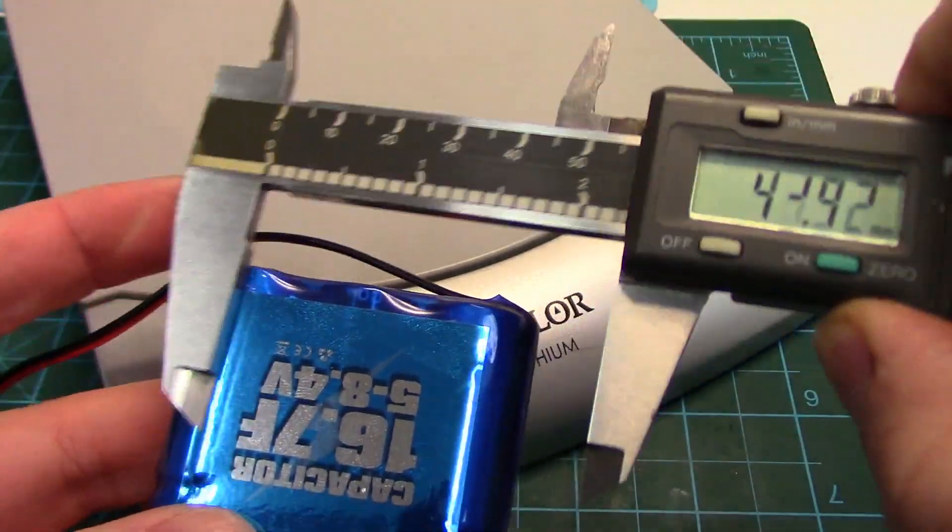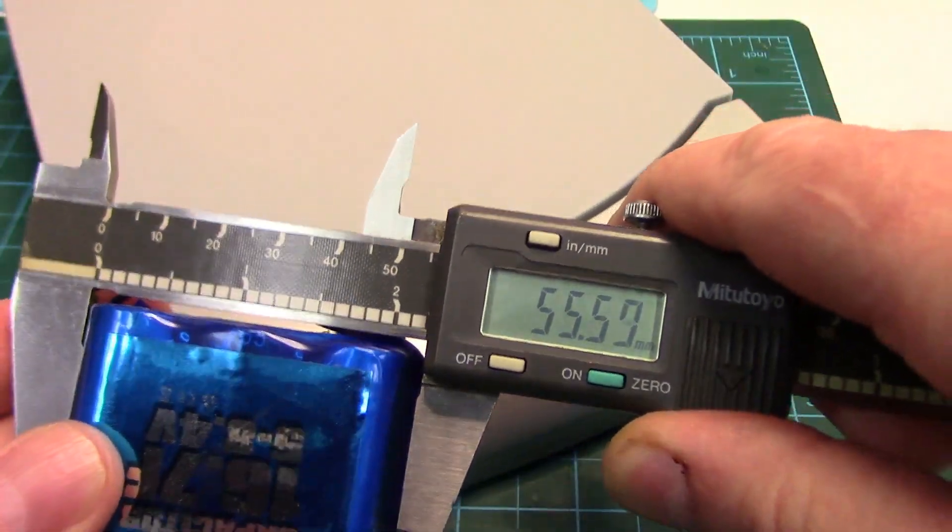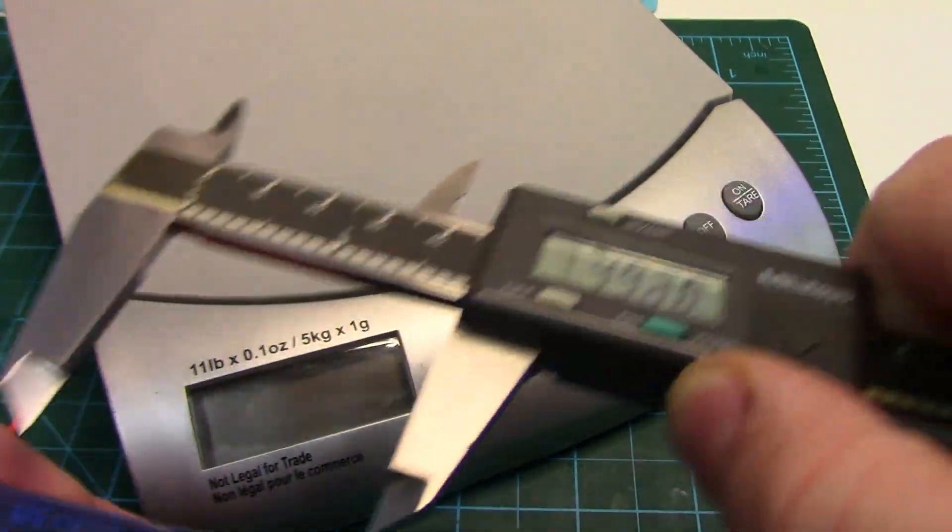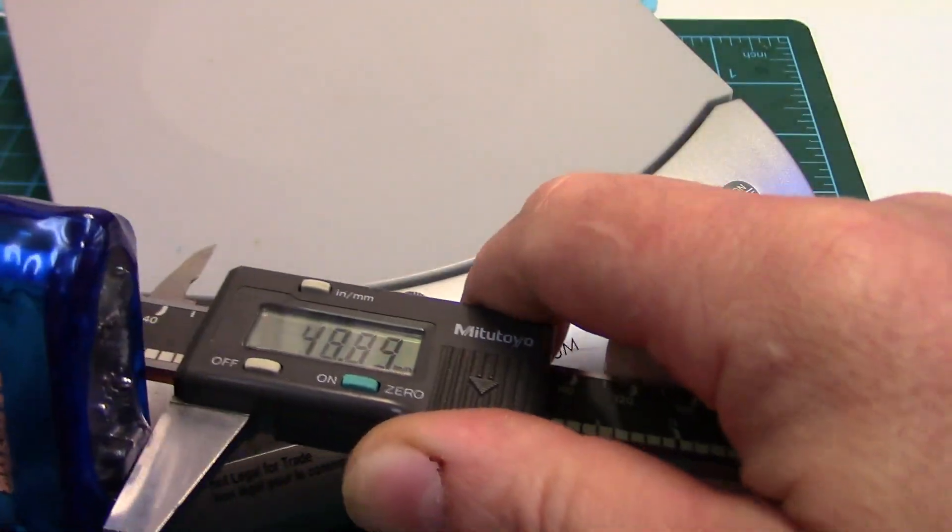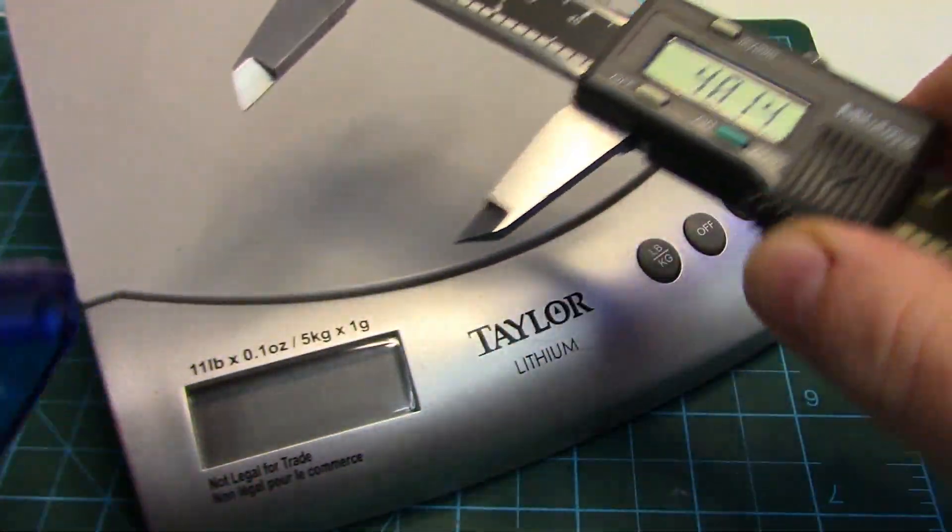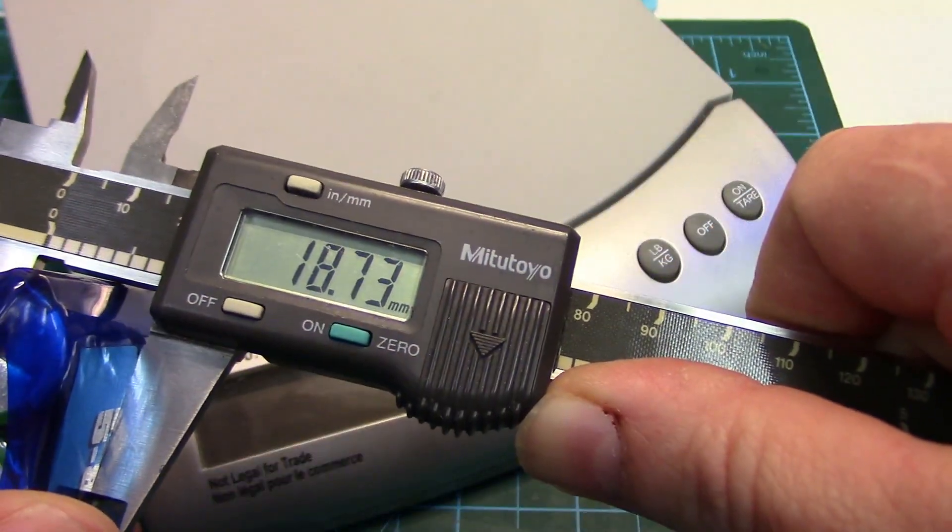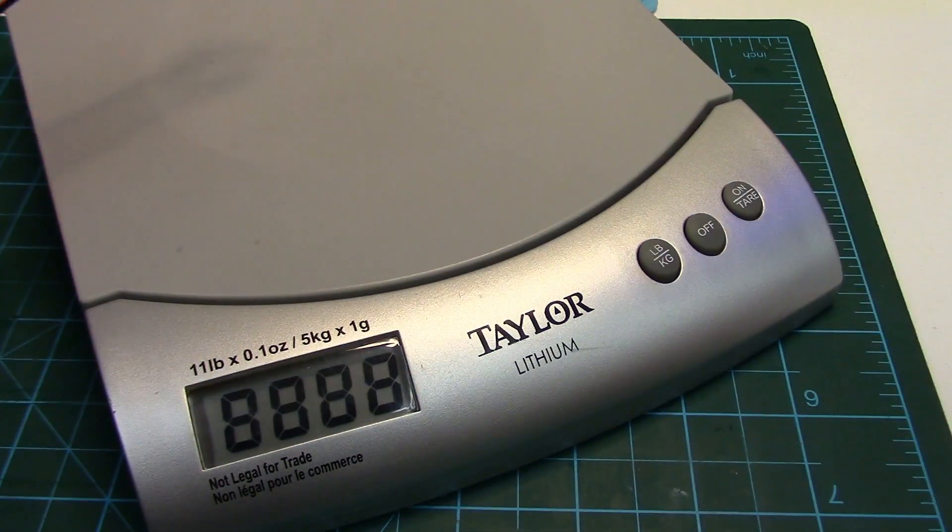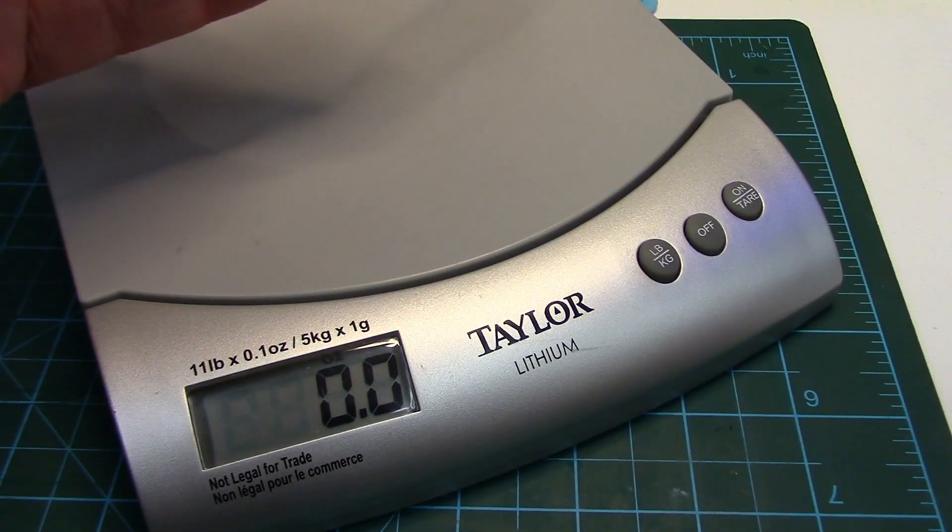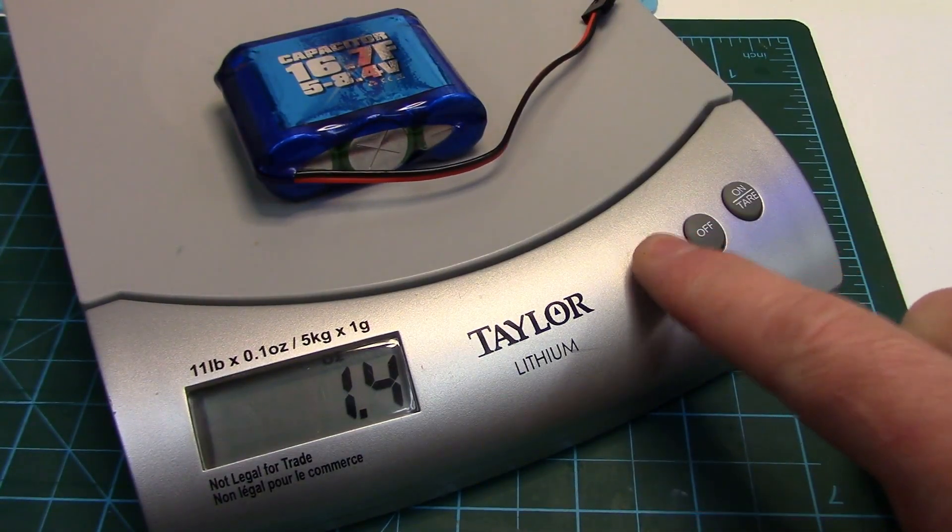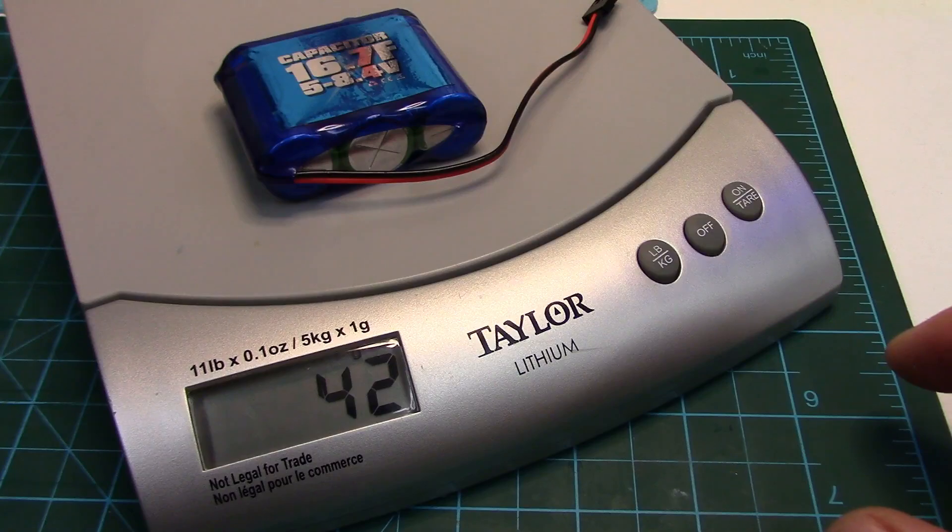Specs real quick. Size here, we're looking at about 56 by, let's go to the highest part on the board here, about 48 by almost 19. And weight-wise, turn our little scale on here, we're looking at 1.4 ounces or about 42 grams.